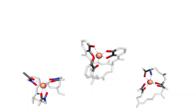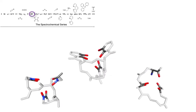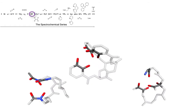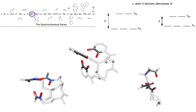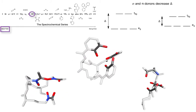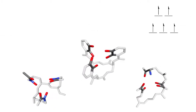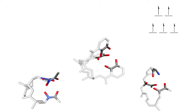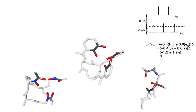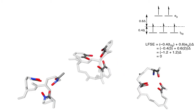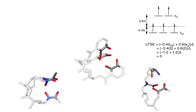Here you can see which siderophore atoms are donated to iron. They are nearly all oxygen atoms, and most of them are negatively charged. The donation of these oxygen atoms means these ligands are sigma and pi donors, meaning siderophores are weak field ligands and would favor a decreased d-orbital octahedral splitting and a high-spin electron configuration.